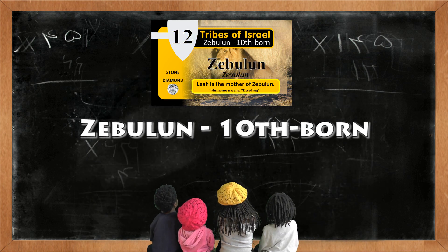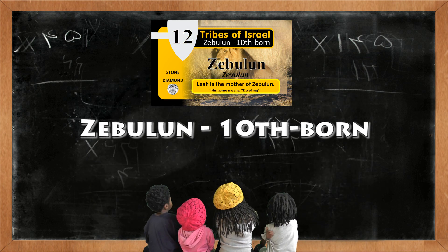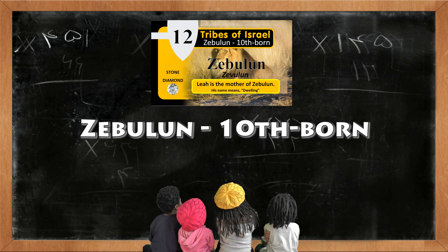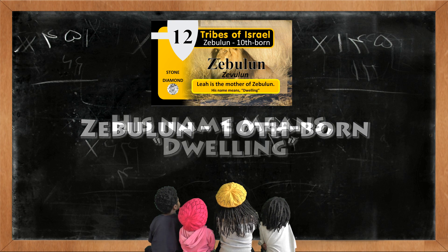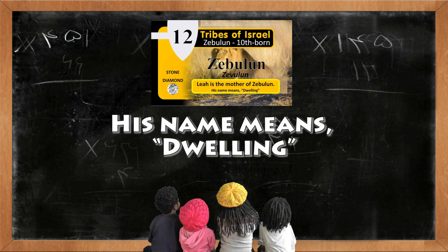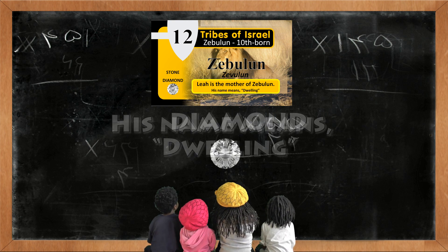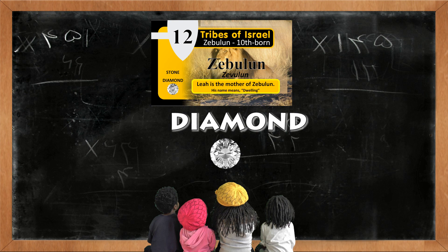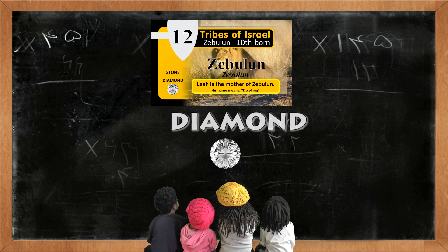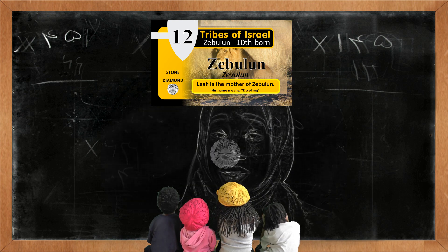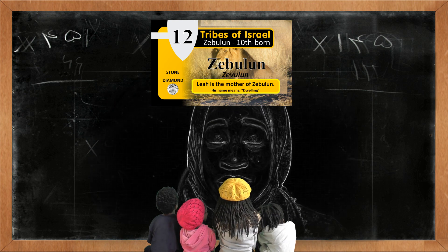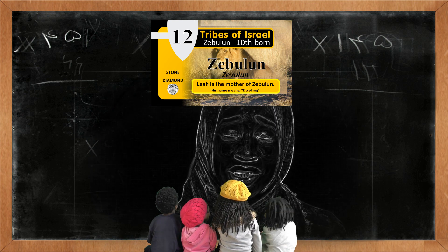Zebulon is the tenthborn son. His name means Dwelling. The diamond represents the tribe of Zebulon. Leah is the mother of Zebulon.